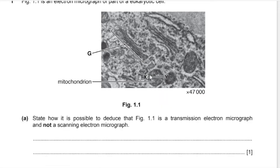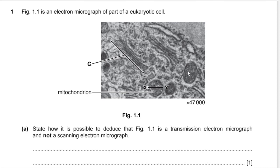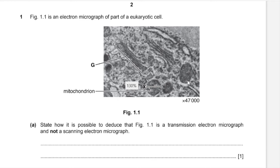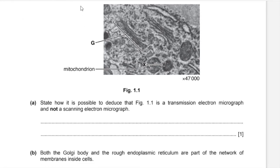This structure over here is a mitochondrion and so is this one. If you look closely at the structure, you'd be able to see internal details like cristae in the mitochondria, which can only possibly be observed using a transmission electron micrograph. And so that would be my answer over here.